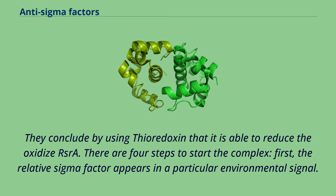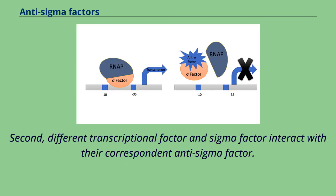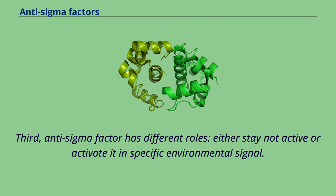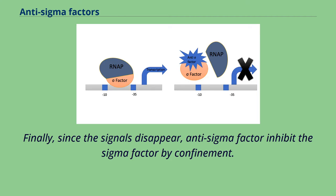There are four steps to start the complex. First, the relevant sigma factor appears in response to a particular environmental signal. Second, different transcriptional factors and sigma factors interact with their corresponding anti-sigma factor. Third, the anti-sigma factor has different roles — either staying inactive or becoming activated in a specific environmental signal. Finally, once the signals disappear, the anti-sigma factor inhibits the sigma factor by confinement.